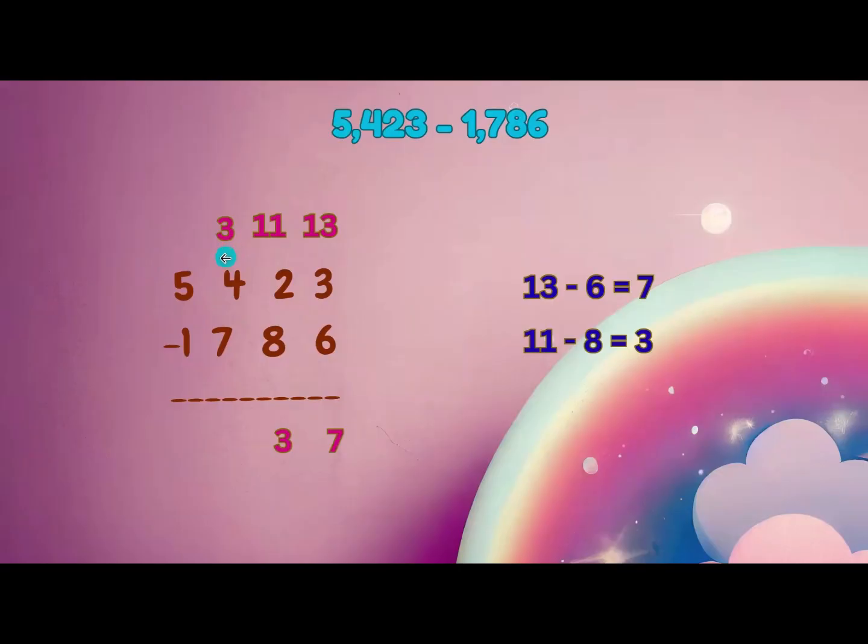borrow 1 from the thousands place. 5 becomes 4, and 3 becomes 13. Now, 13 minus 7 is equal to 6.